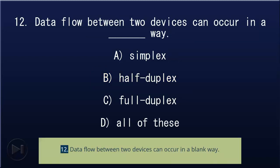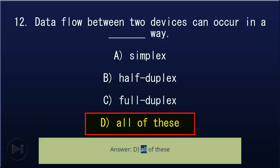12. In both simplex, half-duplex, and full-duplex: A) simplex, B) simplex, C) full-duplex, D) all of these. Answer: D, all of these.